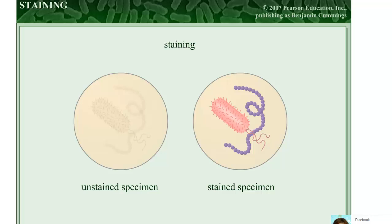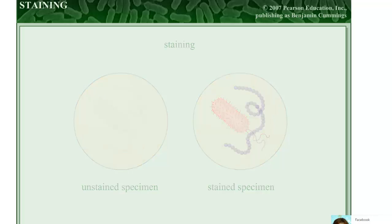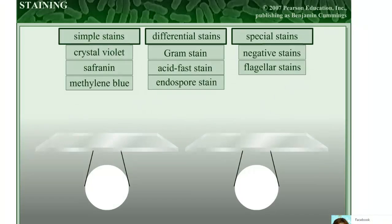Light microscopists utilize stains to increase the contrast and visibility of the specimen, as well as to learn more about the features of the specimen. There are three main categories of stains used by microbiologists: simple stains, differential stains, and special stains.